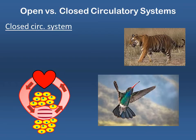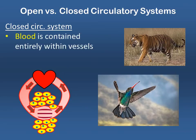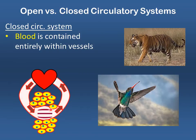Animals with closed circulatory systems — like humans and mammals, birds, reptiles, and amphibians — have their blood contained entirely within vessels. As the heart pumps, blood circulates in a certain direction, at some point crossing fine beds of capillaries. It is there that helpful gases and nutrients can diffuse out of the blood and interact with cells, without the blood ever having to actually leave the cardiovascular system.